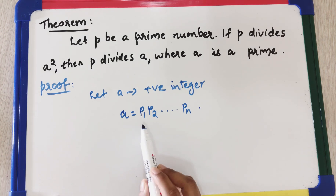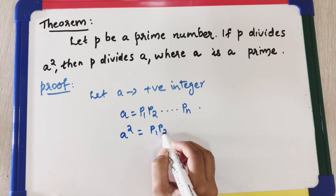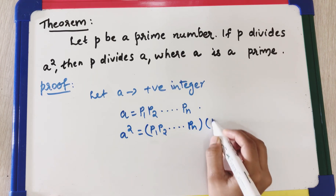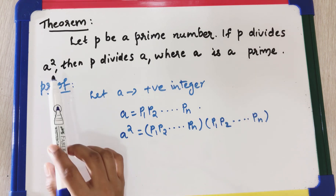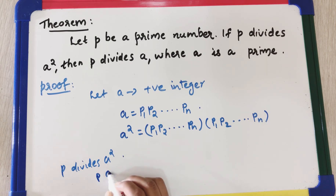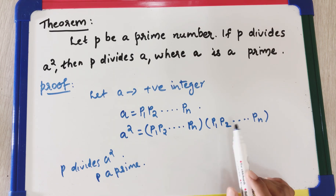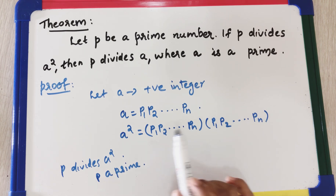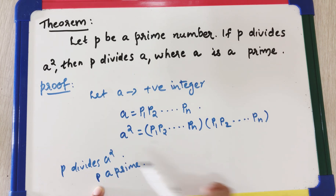Now, if a = p₁ × p₂ × … × pₙ, then a² = a × a = (p₁ × p₂ × … × pₙ) × (p₁ × p₂ × … × pₙ). We are given that p divides a², and p is a prime. By the uniqueness part of the fundamental theorem of arithmetic, the prime factorization is unique — the only primes in the factorization of a² are p₁, p₂, …, pₙ. Therefore p must equal one of p₁, p₂, …, pₙ.